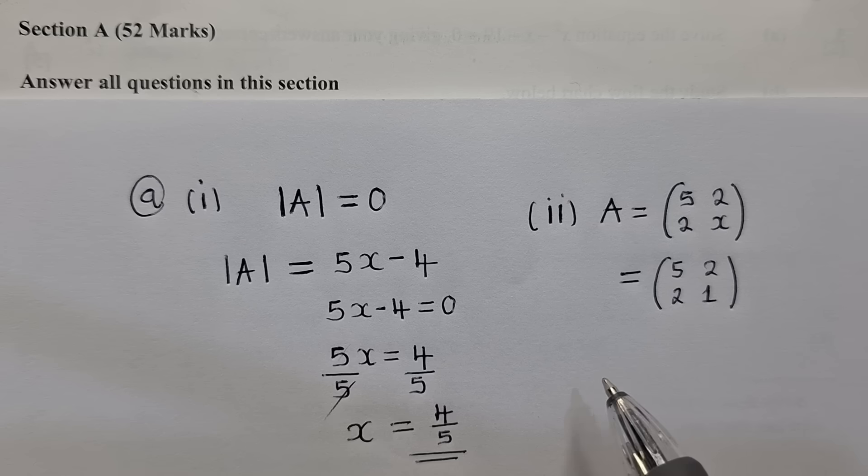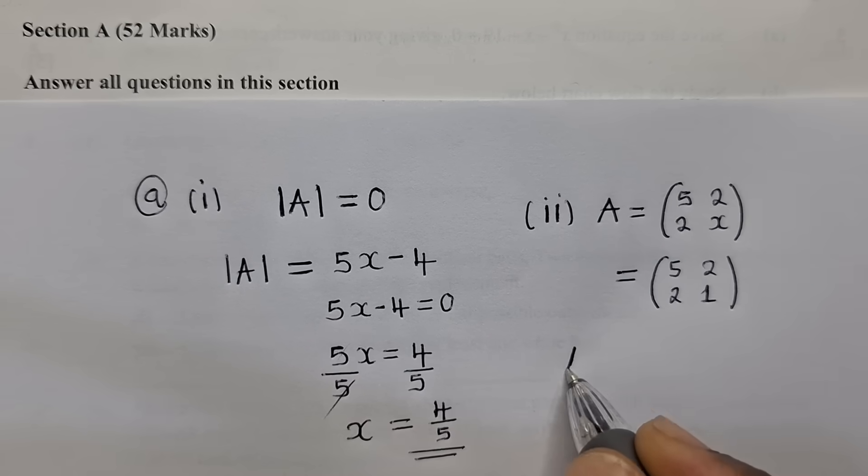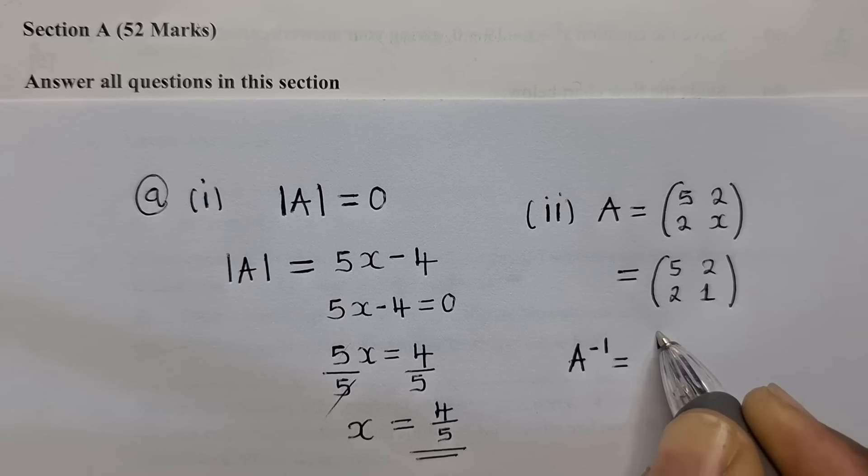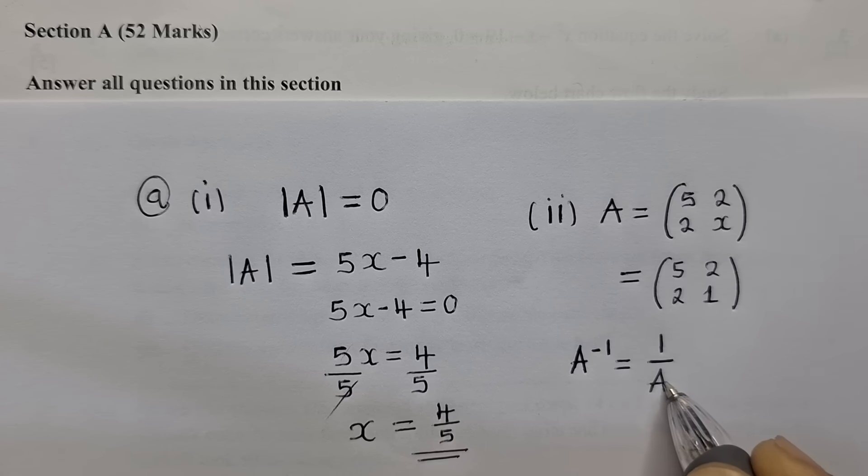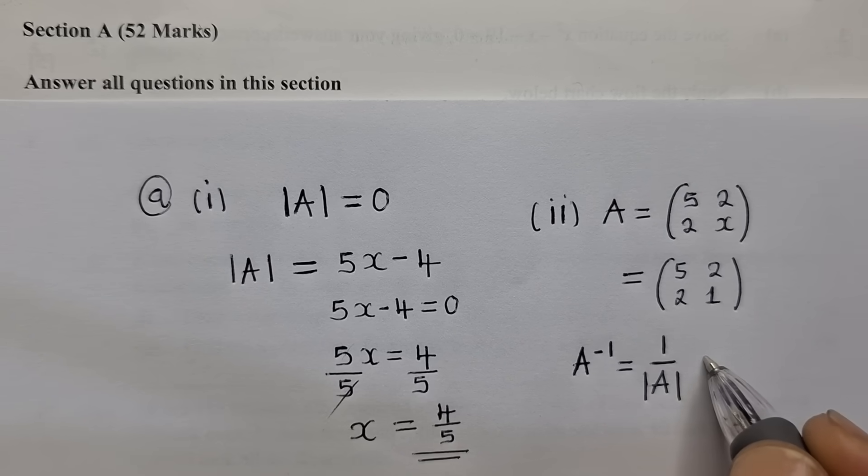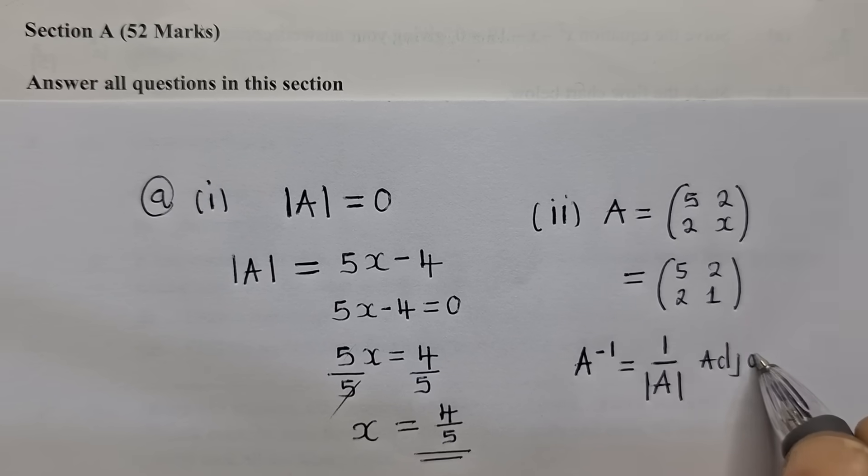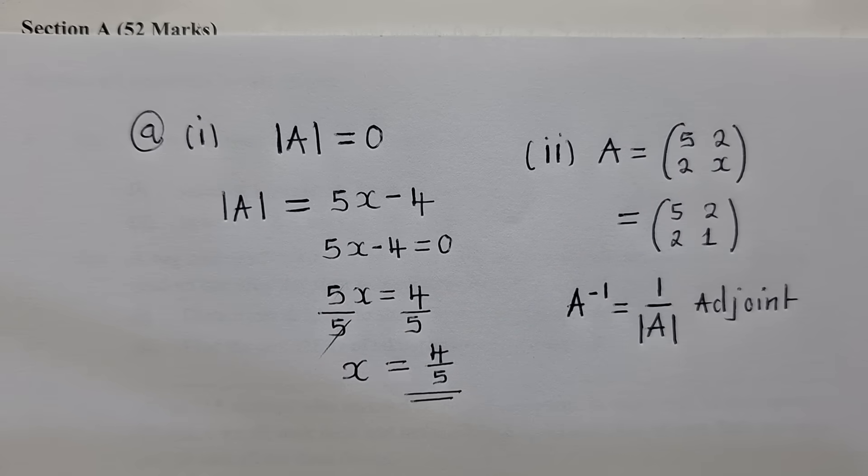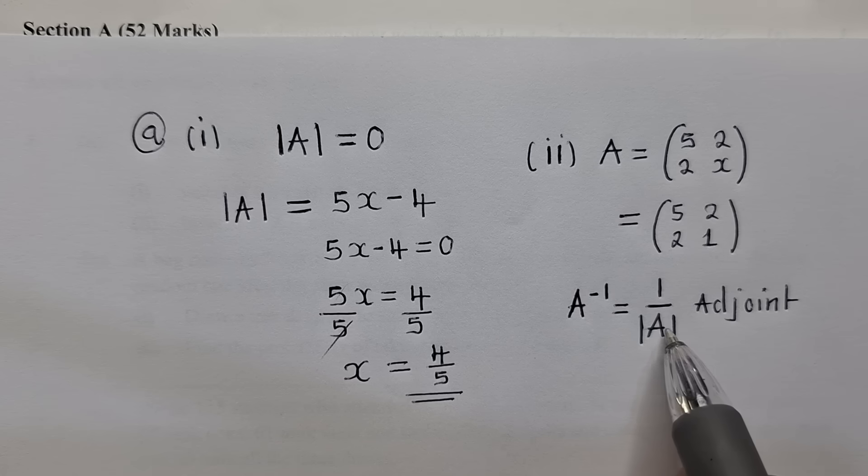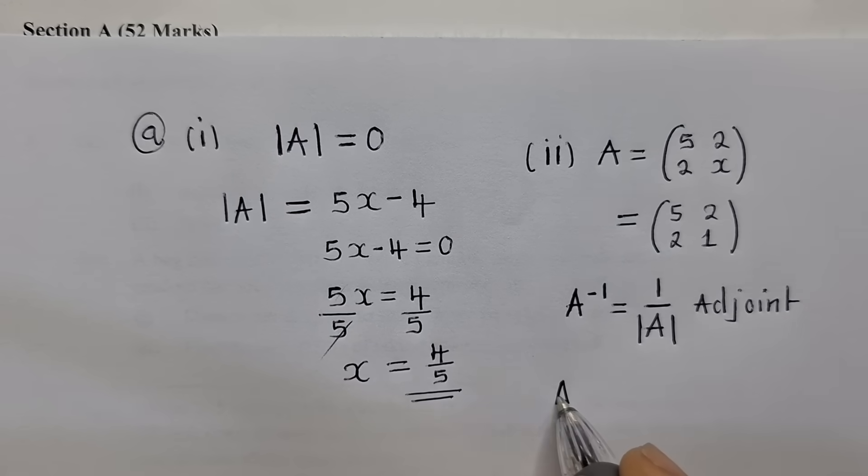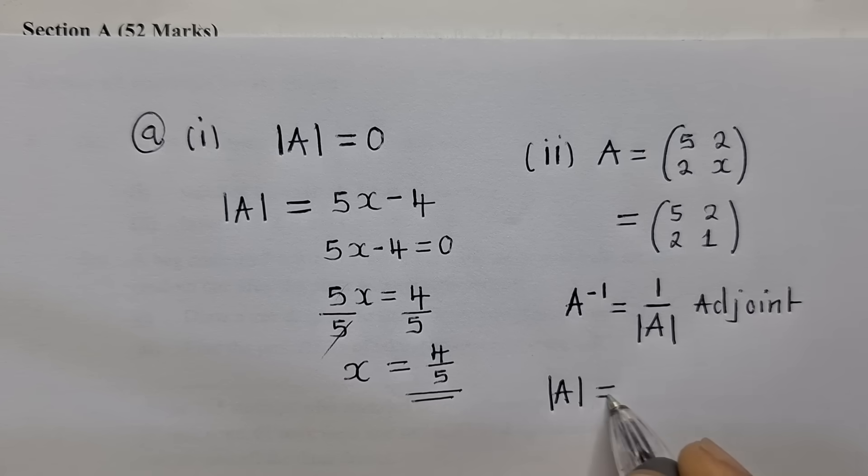In place of x, we're going to substitute a 1. That is because in the question they have said the value of x is equal to 1. So now, this is our matrix A. To find the inverse, we know that inverse of a matrix can be found by writing 1 over the determinant multiplied by the adjoint.